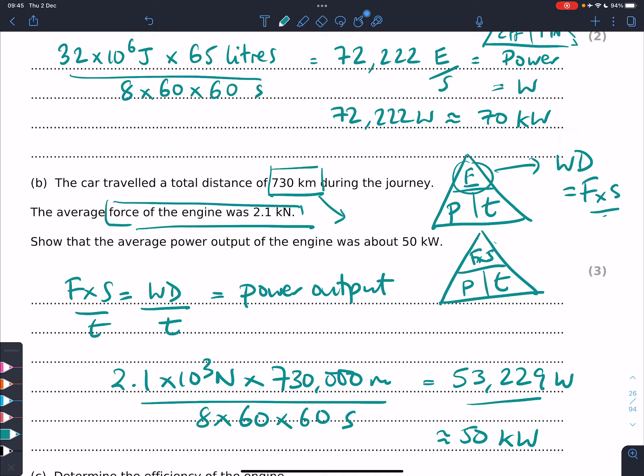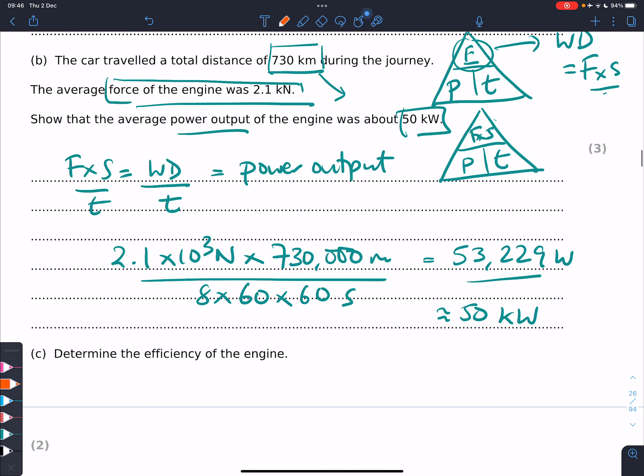The output of the car in terms of power was 50 kilowatts, and the input in terms of fuel is 70 kilowatts. The next part is to determine the efficiency of the engine. Again we can use the triangle: efficiency equals what you get out divided by what you put in.